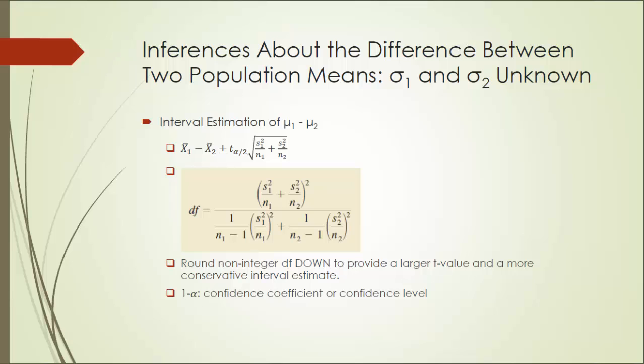Let's look at interval estimation of the difference between two population means first. The point estimate is x1 bar minus x2 bar and the margin of error is given by the critical t value times standard error. Because we do not know about the population standard deviations, we are going to use t distribution instead of normal distribution.